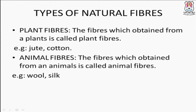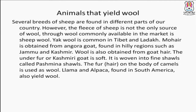Wool and silk are our animal fibers. Now, animals that yield wool — pehle hi hamare dimaag mein aata hai sheep, sheep wool deti hai. But sheep ke alawa bhi bahut saare animals hain jo hum logon ko wool provide karte hain. Several breeds of sheep are found in different parts of our country. However, the fleece of sheep is not the only source of wool, though sheep wool is the most commonly available in the market. Yak wool is common in Tibet and Ladakh. Mohair is obtained from angora goat found in hilly regions such as Jammu and Kashmir.